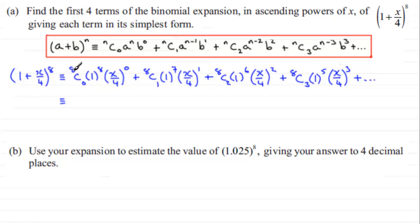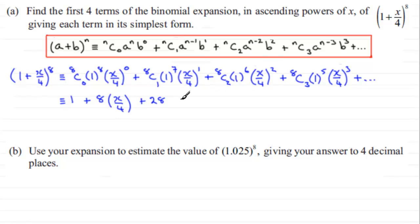Cleaning this up: 8C0 is 1, 1^8 is 1, and anything to the power 0 is 1, so the first term is 1. Next, 8C1 is 8, multiplied by x/4. Then 8C2 is 28, giving 28 × x²/16. And 8C3 is 56, so we have 56 × (x/4)^3, which is x³/64. Plus and so on.